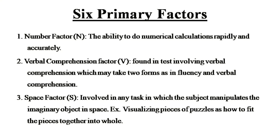The six primary factors of intelligence according to Thurston are as follows. Factor one is the number factor: the ability to do numerical calculations rapidly and accurately. Factor two is verbal comprehension: found in tests involving verbal comprehension, which may take two forms — fluency and verbal comprehension. Factor three is the space factor: involved in any task in which the subject manipulates imaginary objects in space, for example visualizing pieces of puzzles and how to fit them together.